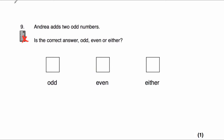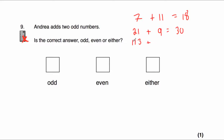Question number 9 says: Andrea adds two odd numbers. Is the answer odd, even, or either? Let's choose some odd numbers. For instance, 7 plus 11 equals 18 — that's even. Then 21 plus 9 equals 30 — that's even. And 113 plus 5 equals 118. Whenever we add two odd numbers, we will get an even number. That makes sense because the two unpaired units in each odd number will pair up together, so the result is always even.